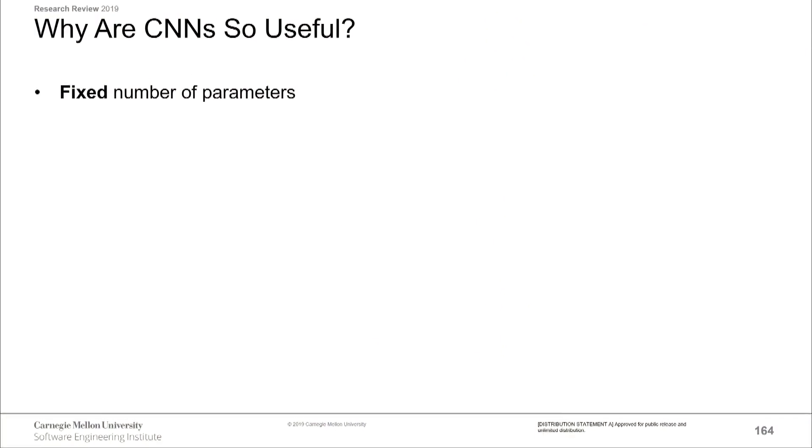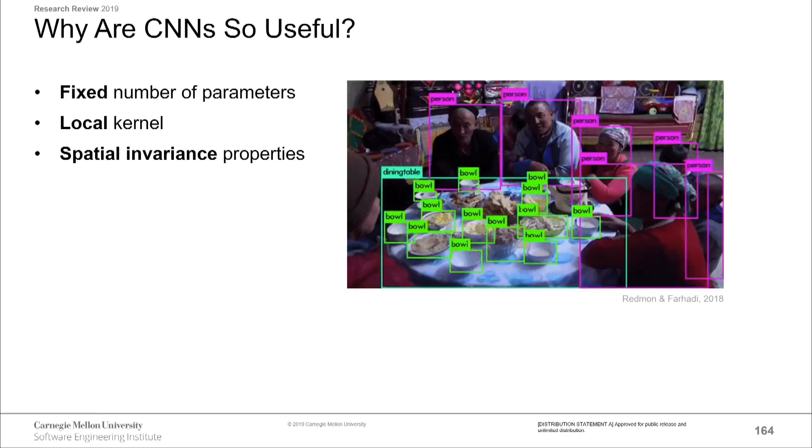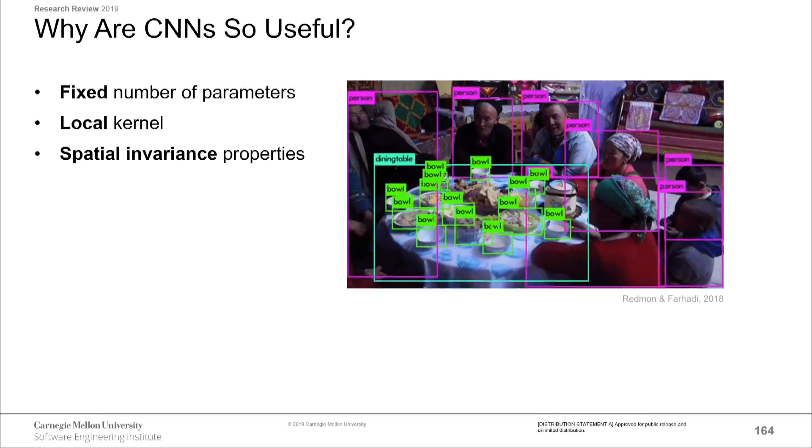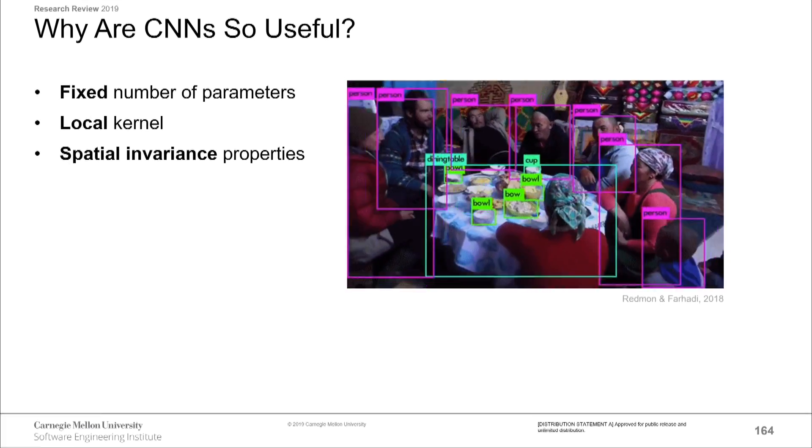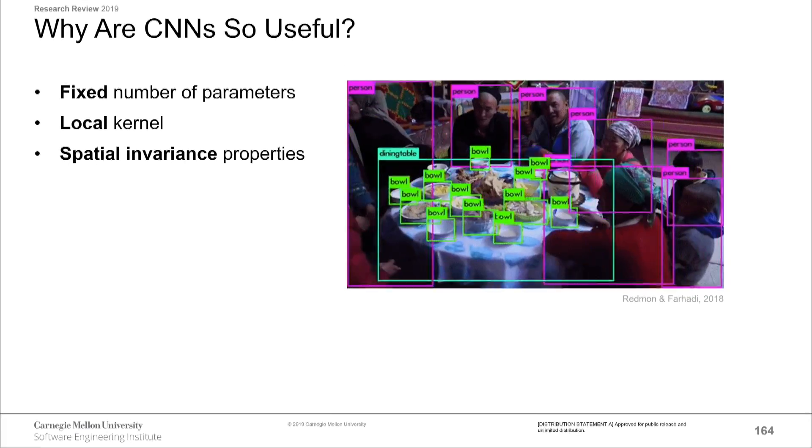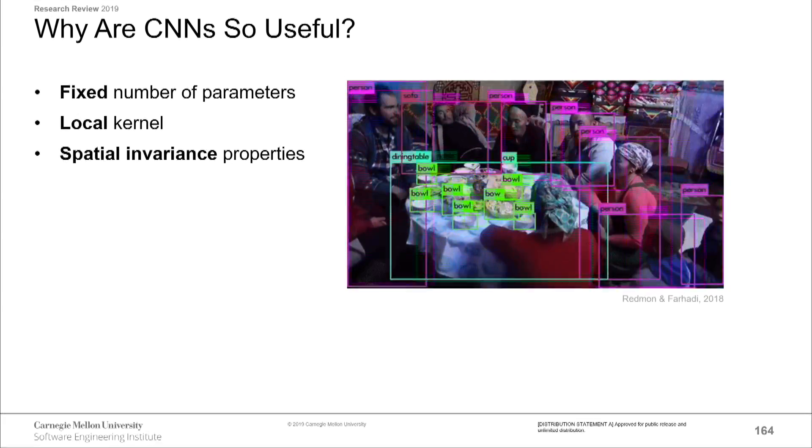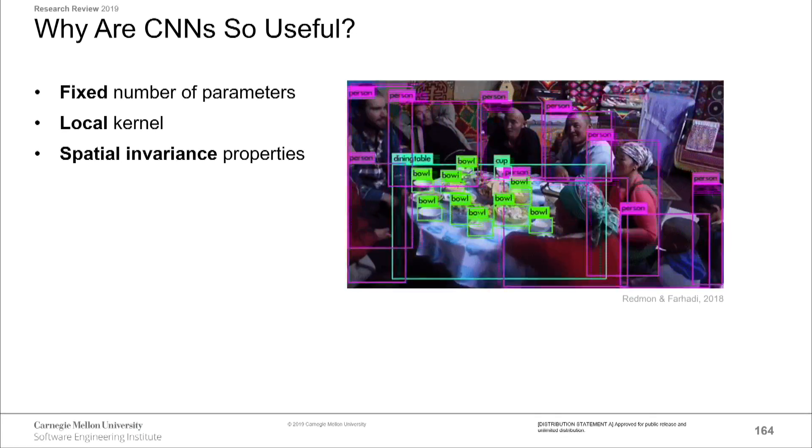So at this point, it's probably worth asking why CNNs in the first place? Why are they so useful? We know that they get such great results, but what is driving these results? So the first thing is that they have a fixed number of parameters. That means you have a low memory footprint and a low computational cost, at least relative to other deep learning techniques. You have a local kernel, which lets you build hierarchies of information. And you have these very nice spatial invariance properties. This means that a cat in the top is the same as a cat in the bottom. It's going to get recognized in the same way. And all of this together lets you do things like real-time object recognition. This is a technology that people would have said was impossible just a decade ago.